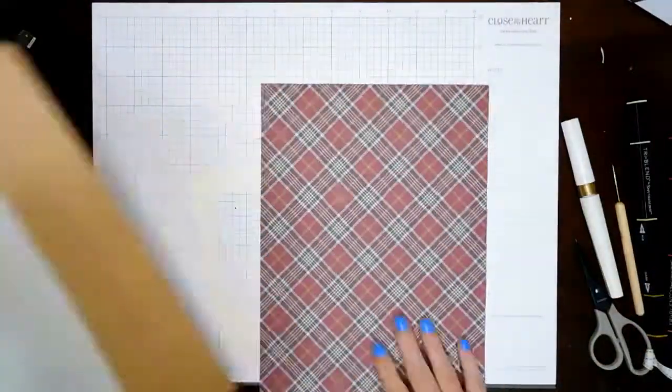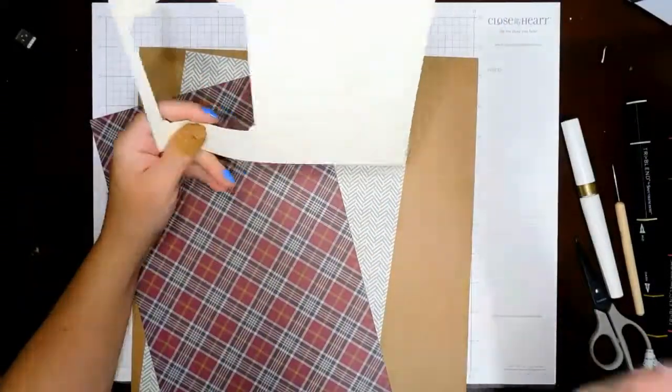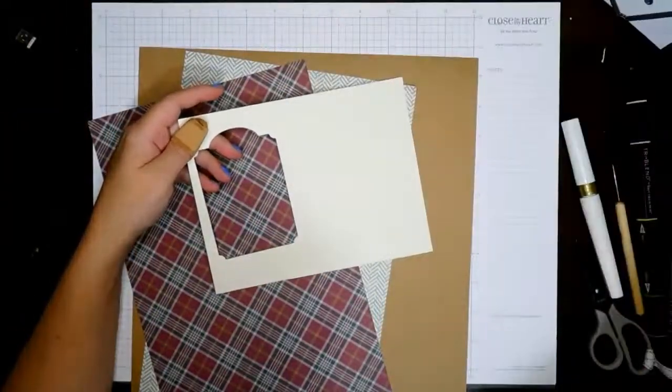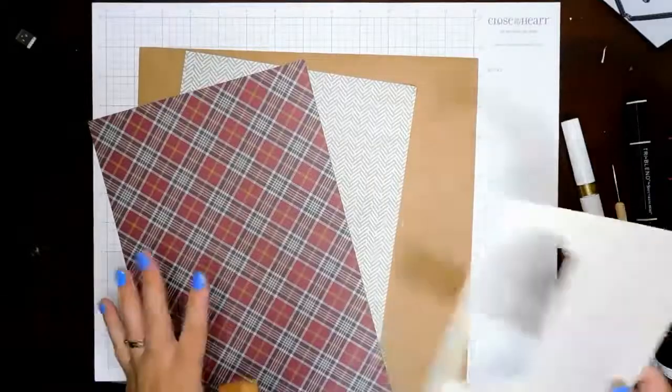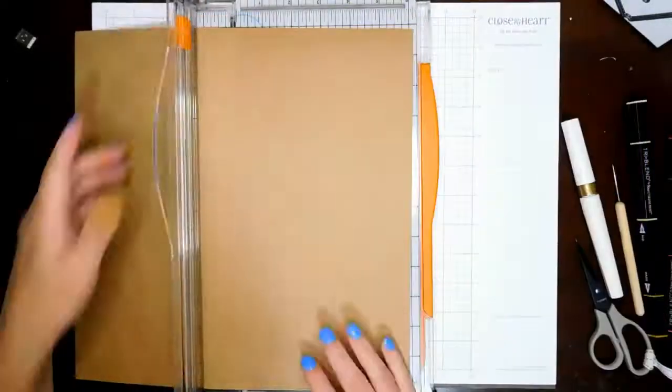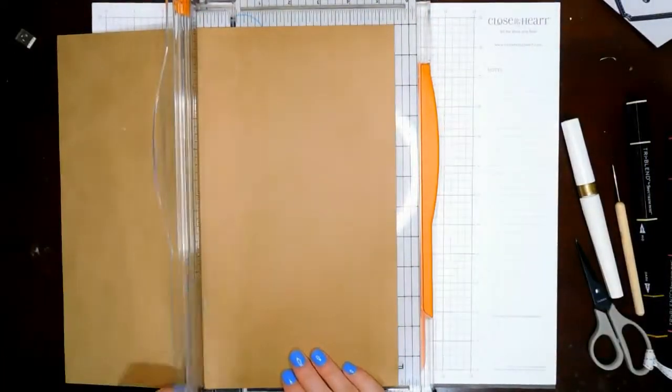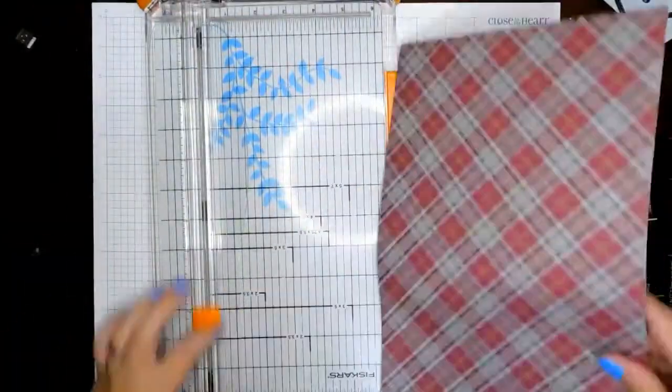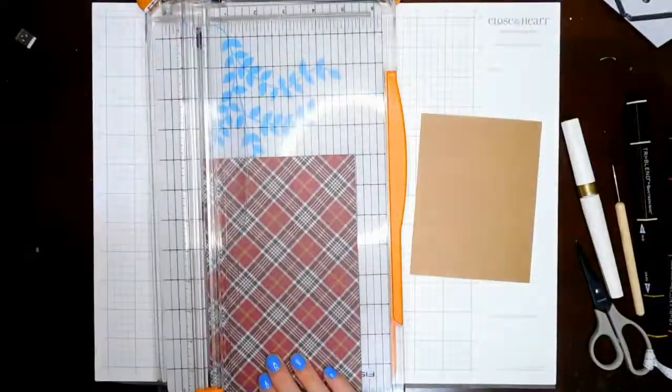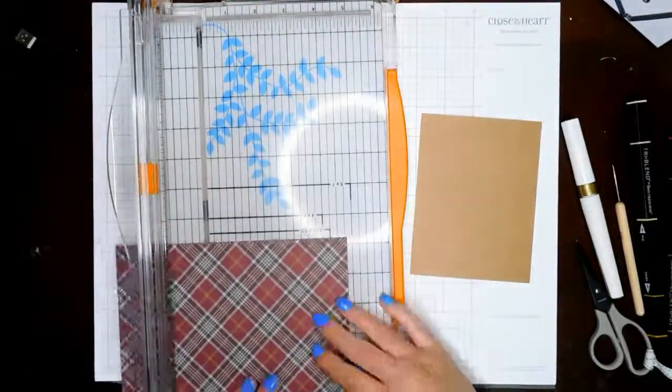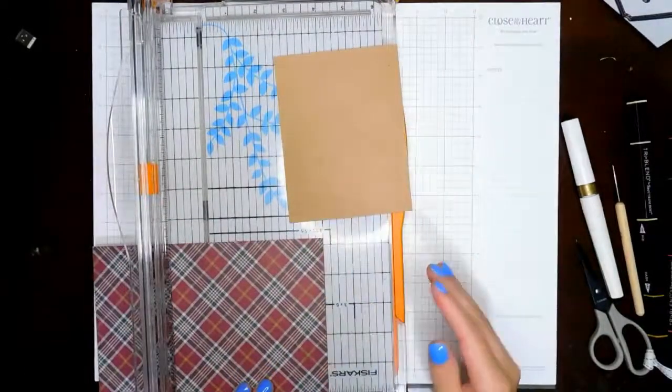So it does start out with the craft cardstock, or at least I think that's where I'm going to start. I'm showing you the papers that I'm going to use, and I'm going to be using some die cuts, or some dies, and all these are from Close to My Heart. I will definitely leave all the links to the products below.